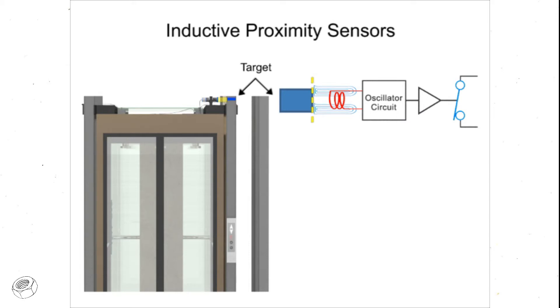These eddy currents induce a power loss within the oscillator circuit, and in turn cause a reduction in the amplitude of the oscillations. This is known as the echo or eddy current killed oscillator principle. This change in amplitude sends a signal to the switch, changing it to its normally open or normally closed configuration, respectively.